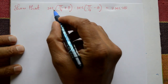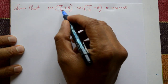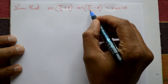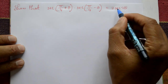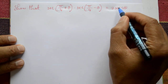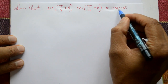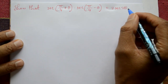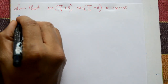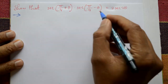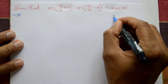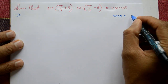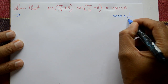Show that sec(π/4 + θ) · sec(π/4 - θ) equals the right-hand side 2·sec(2θ). Now, solution.